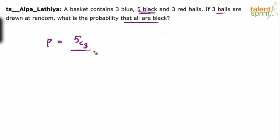Divided by total number of ways. Now what is the total number of balls? 3 blue plus 5 black plus 3 red. So 3 blue plus 5 black is 8 balls, 8 plus 3 is 11 balls. Out of these 11 balls, you have to choose any 3 balls. So it is 5C3 divided by 11C3.